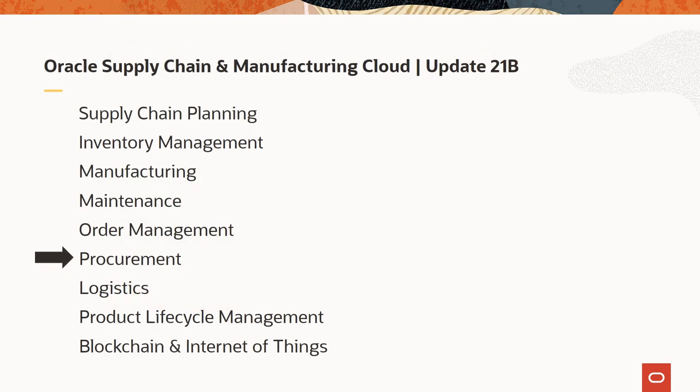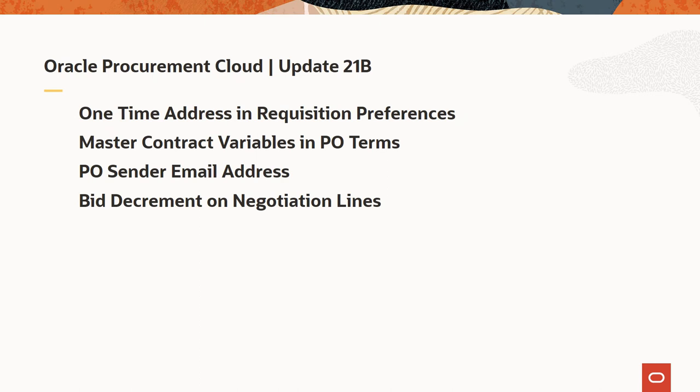Next, Procurement. Some of the new capabilities in Update 21B include one-time addresses in requisition preferences, master contract variables in your purchase order terms, specifying a purchase order sender email address, and line-level bid decrements. These are covered in more detail in the Procurement Cloud Update 21B spotlight delivered by Tom Anthony.